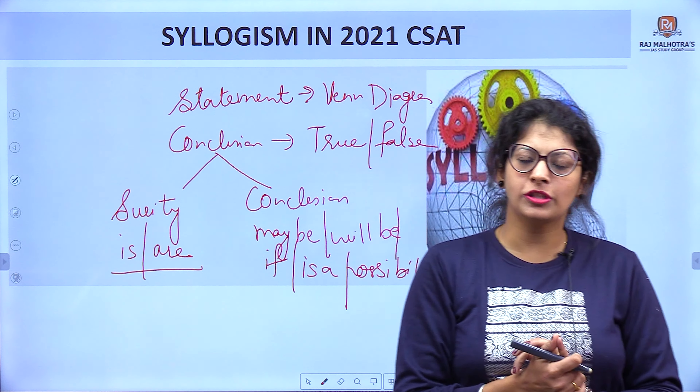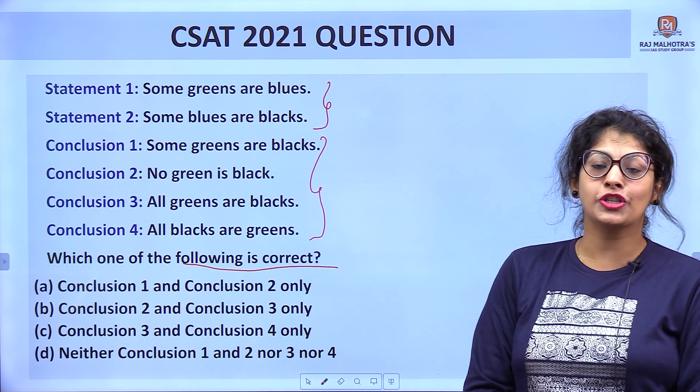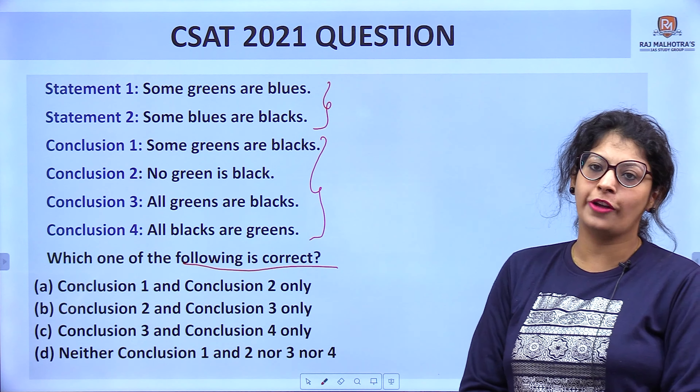Conclusions are of two types: surety and possibility. We have to check whether this is a case of surety or possibility. If in the conclusion we have the words 'is' or 'are', it is the case of surety. If in the conclusion we have words like 'may be' or 'will be', then it is the case of possibility.